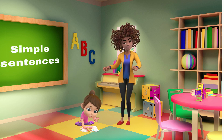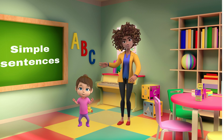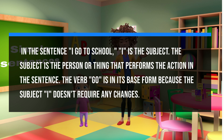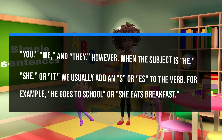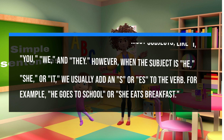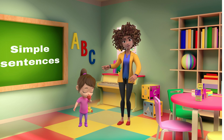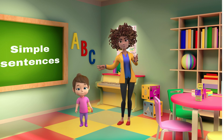Now, let's take a moment to understand the grammar rule of these sentences. In the sentence 'I go to school,' 'I' is the subject. The subject is the person or thing that performs the action in the sentence. The verb 'go' is in its base form because the subject 'I' doesn't require any changes. We use the base form of the verb for most subjects, like I, you, we, and they. However, when the subject is he, she, or it, we usually add an 's' or 'es' to the verb. For example, 'he goes to school,' or 'she eats breakfast.' This helps us talk about routines and habits in the present simple tense.